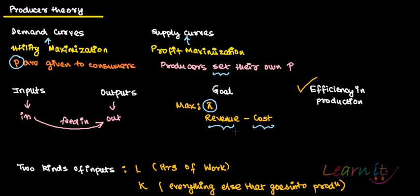Producers maximize profit using efficiency in production. How is this efficiency achieved? Given the cost budget the producer has, it must maximize its own production. Or, given a required production level, how does it minimize cost? We will study efficiency in production in detail.